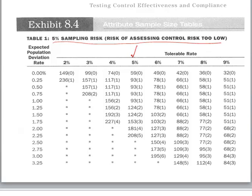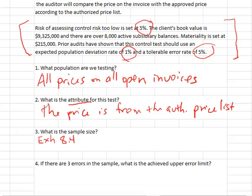The tolerable error rate is 5%. The expected population deviation rate is 1%. So this table tells us that we should test a price on 93 different invoices. You see the numbers in parentheses next to these sample sizes. Those indicate the number of control deviations or problems you could find in your test and still conclude that the control operates as designed. Those numbers are not ordinarily available to auditors and they don't really have any meaning for us, so we'll disregard those numbers. So exhibit 8.4 tells us that the sample size should be 93.